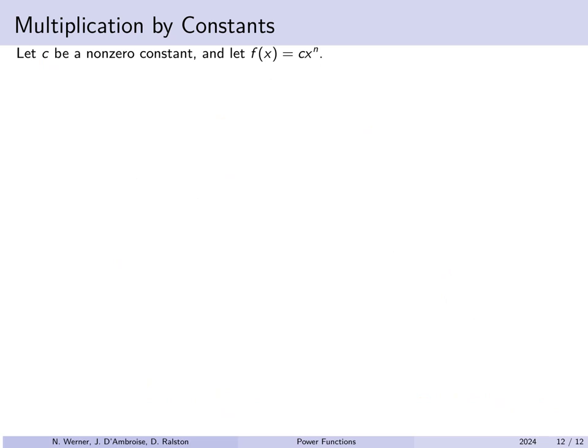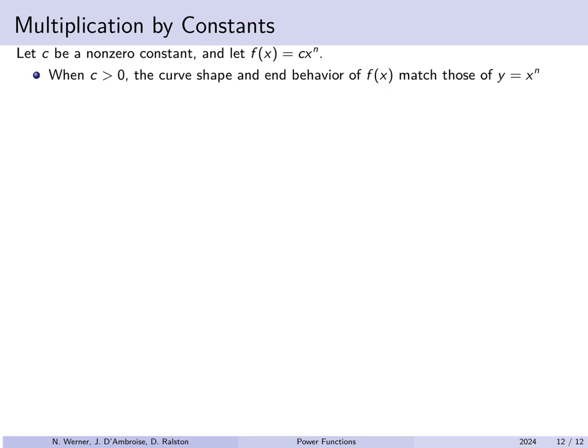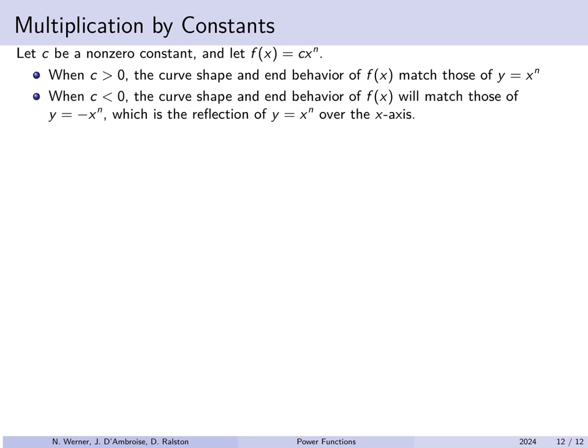Multiplying by a constant c affects the graph of c · x^n. When c is positive, the end behavior is unchanged — going up twice as fast still means going up. When c is negative, all y-coordinates are reversed, which reflects the curve over the x-axis, flipping whether it goes up or down.